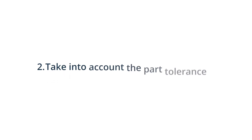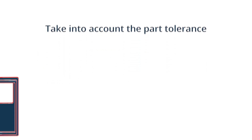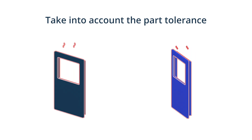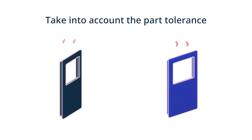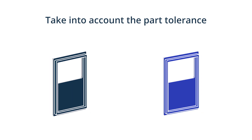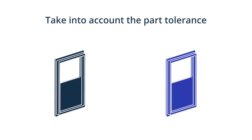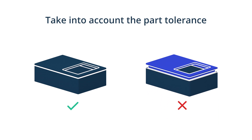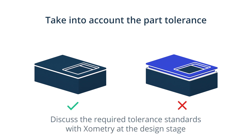2. Take into account the part tolerance. Tolerances are affected by the shrinkage that occurs during the cooling process. Amorphous materials, like PLA, generally have tighter tolerances than semi-crystalline materials like PEEK. Tight tolerances make production more expensive, but they may be necessary for your part to fit or function properly, especially if it is used in an assembly. We recommend contacting your supplier at the design stage to discuss the tolerance standards that they use.